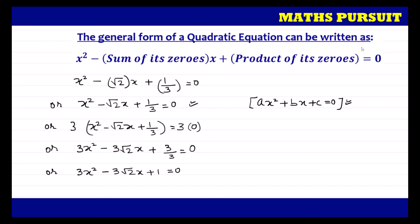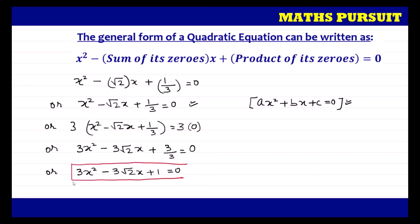This is the equation we got. This is the quadratic polynomial that the question wants us to determine: 3x squared minus 3 root 2 x plus 1 equals 0. This is very easy and straightforward — we just replace the values into the given formula.